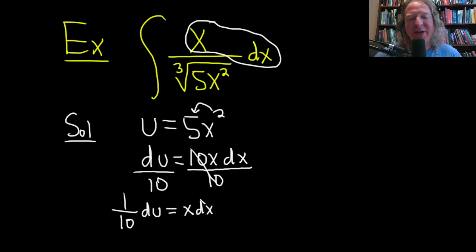And so now we have exactly what's in the integrand, right? We have this x dx, x dx, x dx. So let's go ahead and make that substitution.